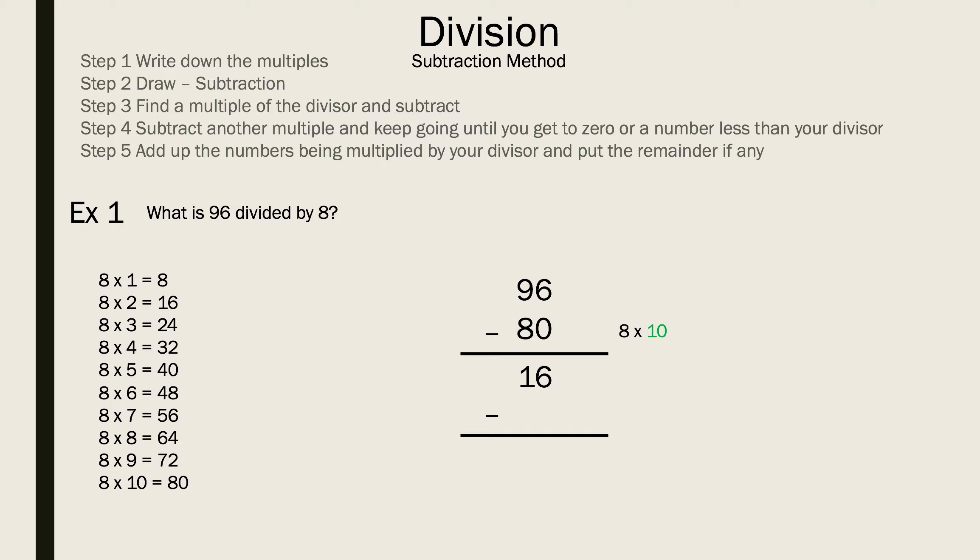Now we're going to subtract again and pick another multiple of 8. We know 16 is a multiple because it's written down. So we pick 16. That's 8 times 2. Now you subtract again and you get 0. We're done with this question. Now we add up the green numbers and we get 10 plus 2, which is 12. So 96 divided by 8 is 12.